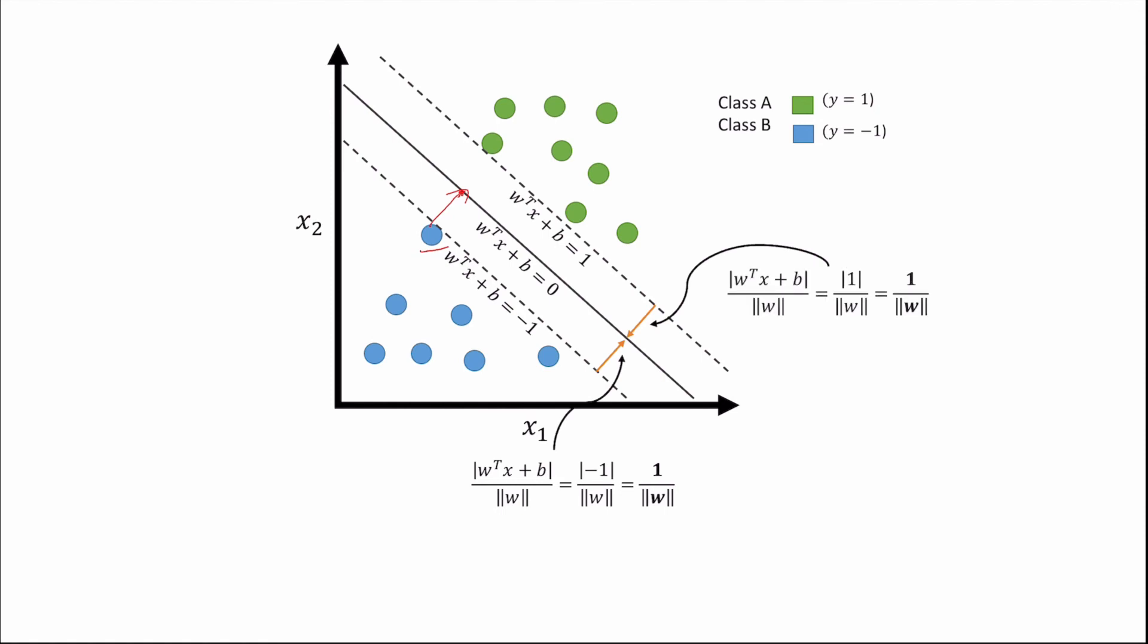again giving us a value of 1 divided by the norm of our weight vector. So our total margin is therefore given by these two values added up, giving a value of 2 over the norm of our weight vector.